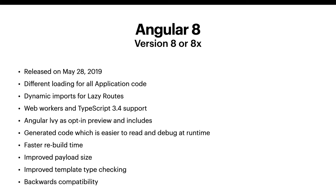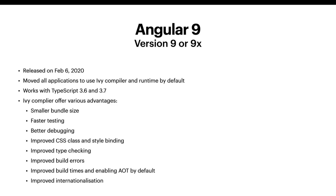Google released Angular 9 on February 6, 2020. Most improvements were related to the Ivy compiler — it moved all applications to use the Ivy compiler by default at runtime. It also added support for TypeScript 3.6 and 3.7. The Ivy compiler project brought several key advantages that Angular was pushing users to adopt.